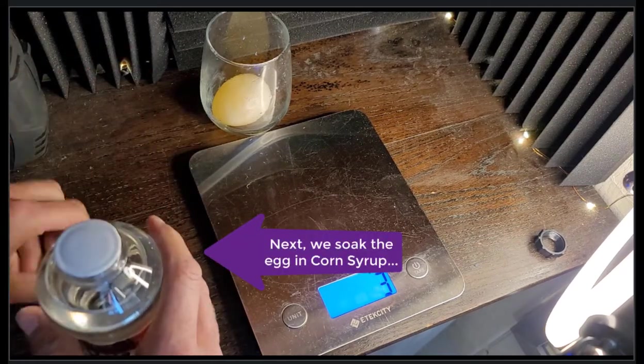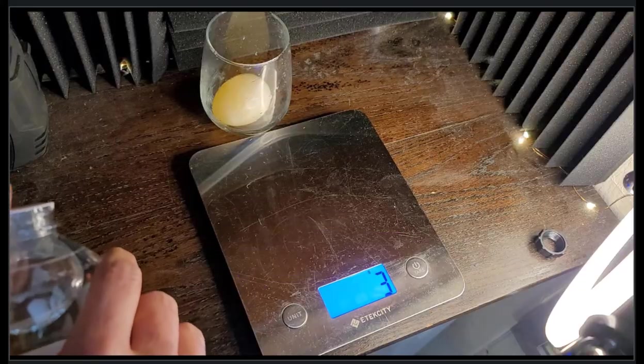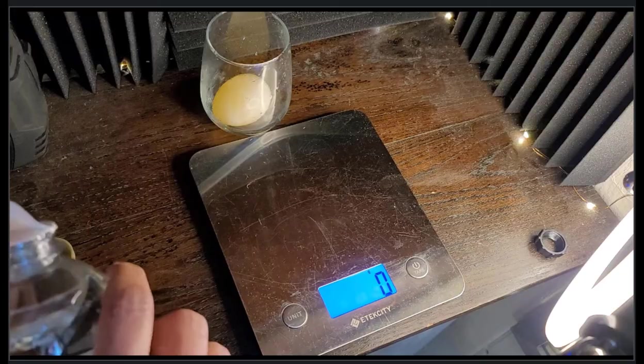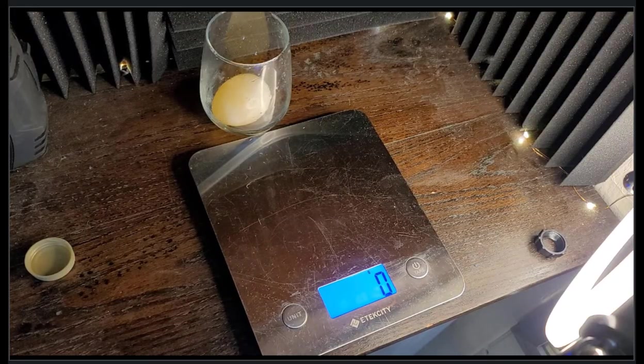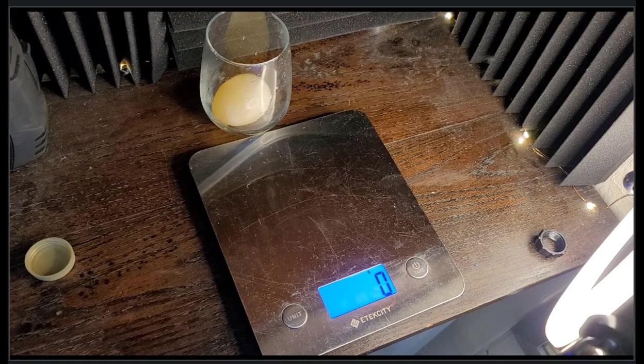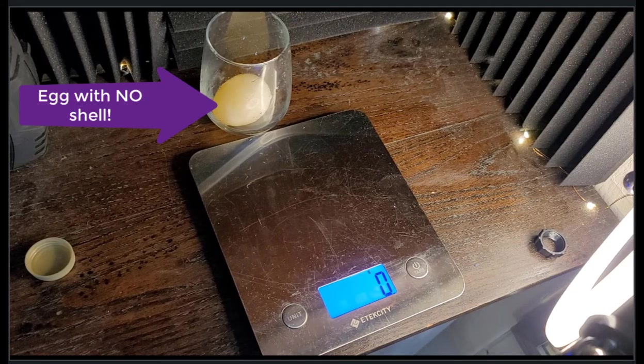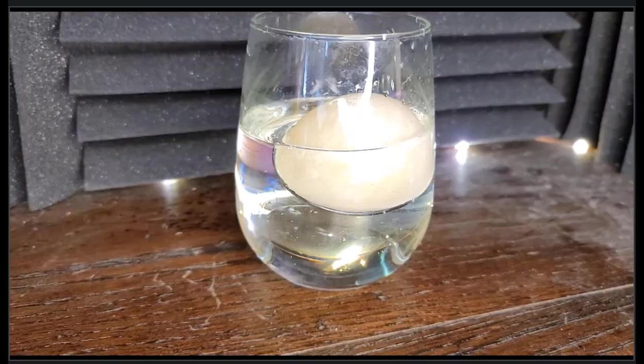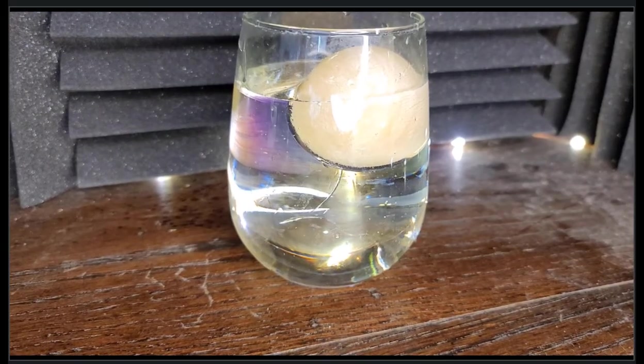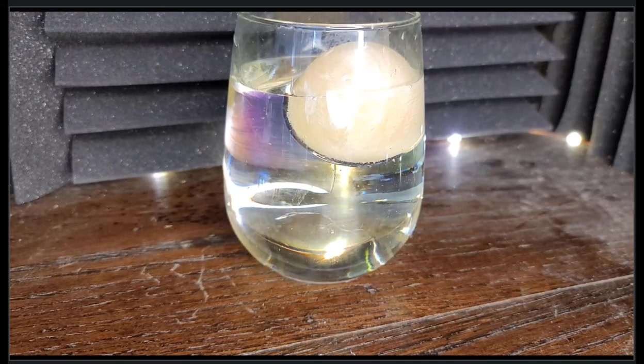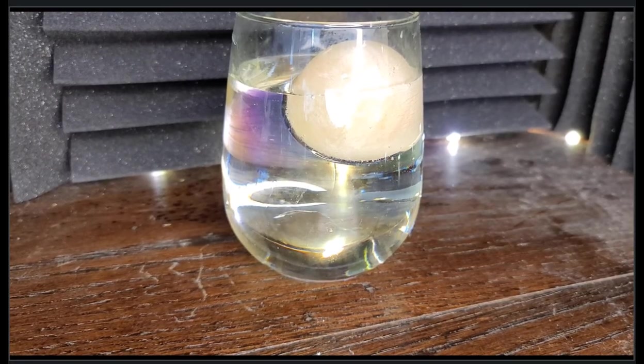Now for the next part of the experiment, I'm going to carefully put the egg back in the glass and now I'm going to soak my egg in a solution of corn syrup. In the past, I've used both light and dark corn syrup and both of them seem to work fine. In this particular case, I'm going to use the light corn syrup as I think it will be easier to see the egg through the glass for this part of the experiment.